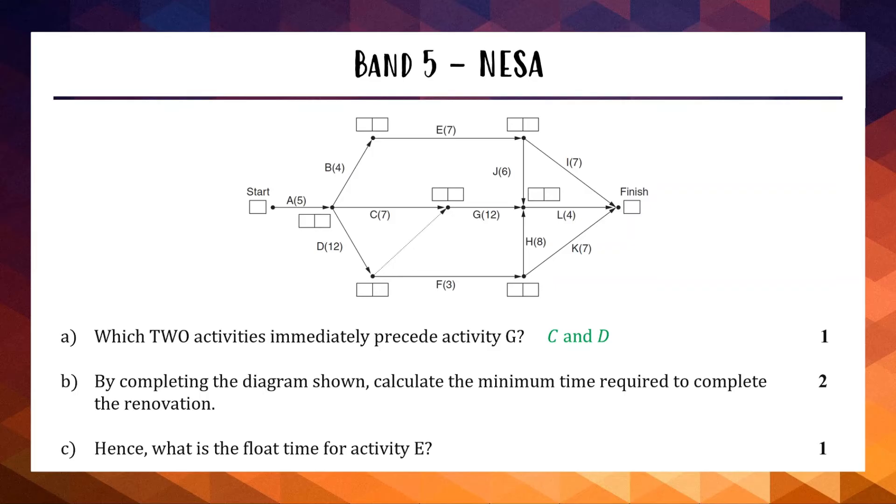Question B: By completing the diagram shown, calculate the minimum time required to complete the renovation. We're trying to find the earliest finish time for this job and we're going to do what's called forward scanning. We start off by writing a zero at our start and now we're essentially trying to find the longest time to get to any of the vertices. The critical path is the longest path through your network diagram.